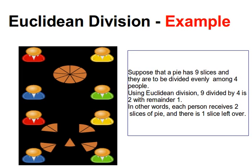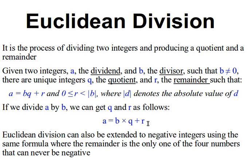For an intuitive example — most of this material is from Wikipedia — imagine we have a pie sliced into nine slices and we want to divide it among four people. We can give each of the four people two slices and we end up with one slice left over. That is Euclidean division: nine divided by four is two with remainder one.